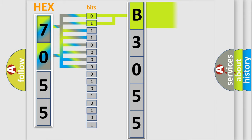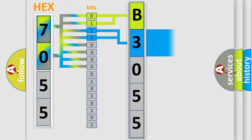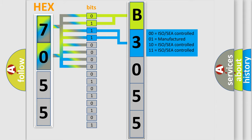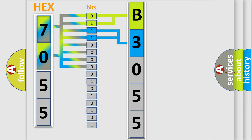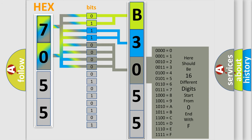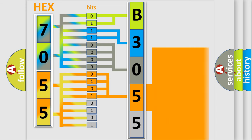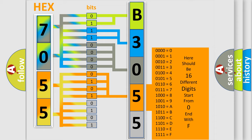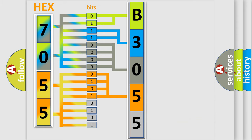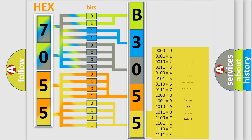By combining the first two bits, the basic character of the error code is expressed. The next two bits determine the second character. The last four bits of the first byte define the third character of the code. The second byte is composed of a combination of eight bits: the first four bits determine the fourth character of the code, and the last four bits define the fifth character. A single byte conceals 256 possible combinations.